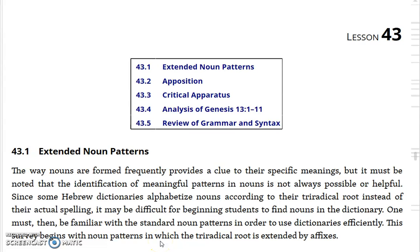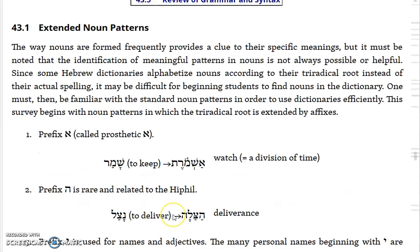We'll now introduce lesson 43 of Ross, which will treat noun patterns, apposition, and a bit more in the critical apparatus. The way nouns are formed frequently provides a clue to their specific meaning, but it must be noted that the identification of meaningful patterns in nouns is not always possible or even helpful.